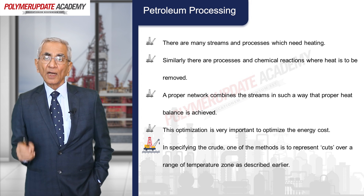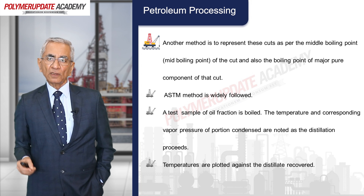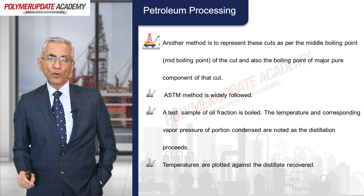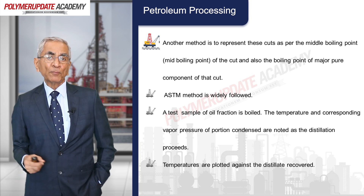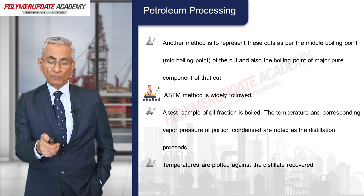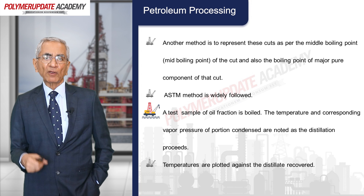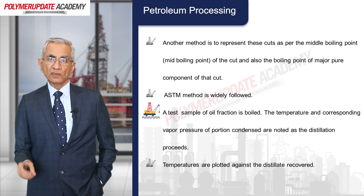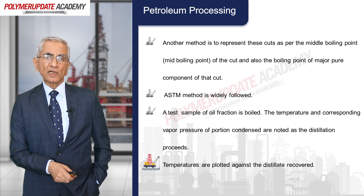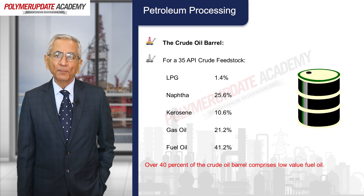In specifying the crude, one method is to present cuts over a range of temperature zones. Another method is to represent these cuts by the mid boiling point of the cut and the boiling point of major pure components. For this, the ASTM method is normally followed: a test sample of oil fraction is boiled, the temperature and corresponding vapor pressure of the portion condensed are noted, and temperature is plotted against the distillate removed to produce a typical ASTM distillation curve.